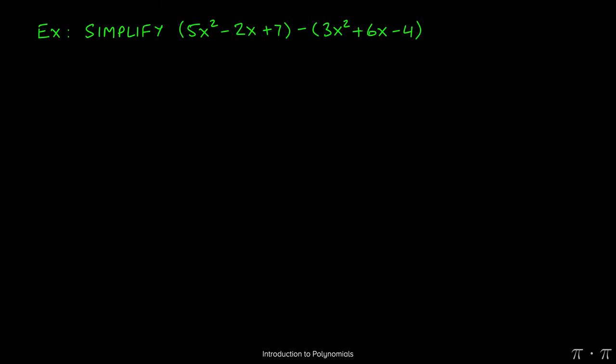Let's say we're asked to subtract the following polynomials: 5x² - 2x + 7 minus the quantity 3x² + 6x - 4. We start by recognizing that in order to get rid of the parentheses around the polynomials,